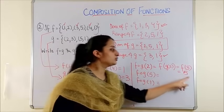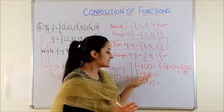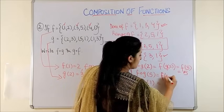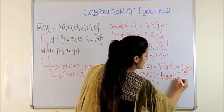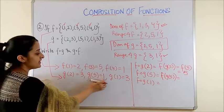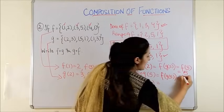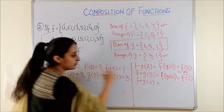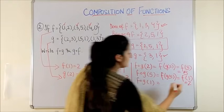So F of G of 2 becomes 5. Similarly, starting with F of G of 5, we say this is F applied to G of 5. Now, G of 5 is just 1 and F of 1 further gives us the answer 2.